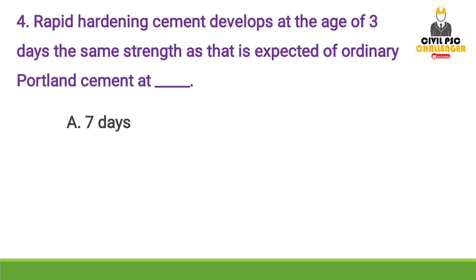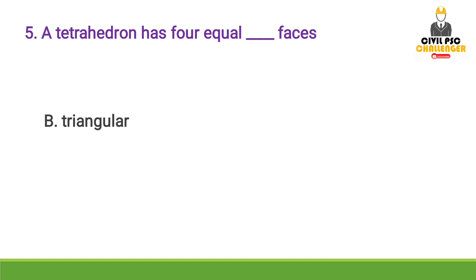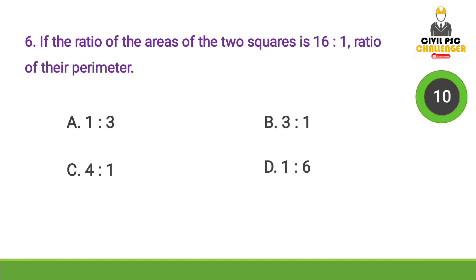Next question: A tetrahedron has 4 equal dash faces — Answer: Option B, triangular faces. A tetrahedron has 4 equal faces, and those faces are equilateral triangles. So a tetrahedron has 4 equal equilateral triangular faces.